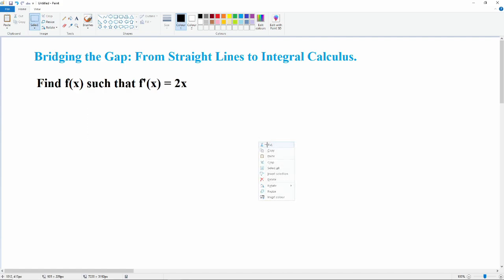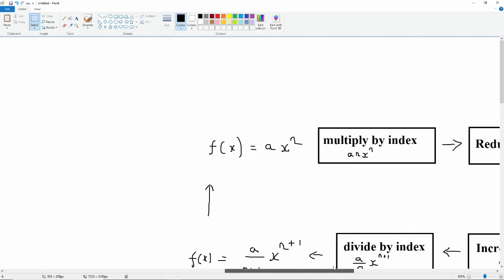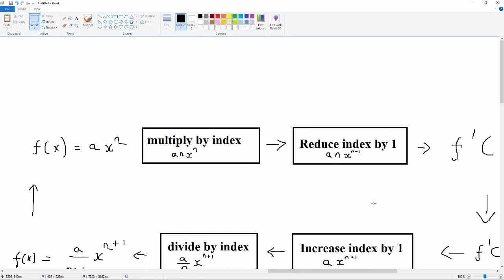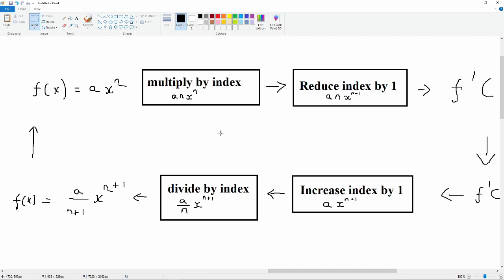So what have we actually done? Well, if we have any polynomial in the form of f of x is equal to ax to the power n, we multiply by the index, which gives us anx to the power n, and then we reduce the index by 1, so we get anx to the power n minus 1.